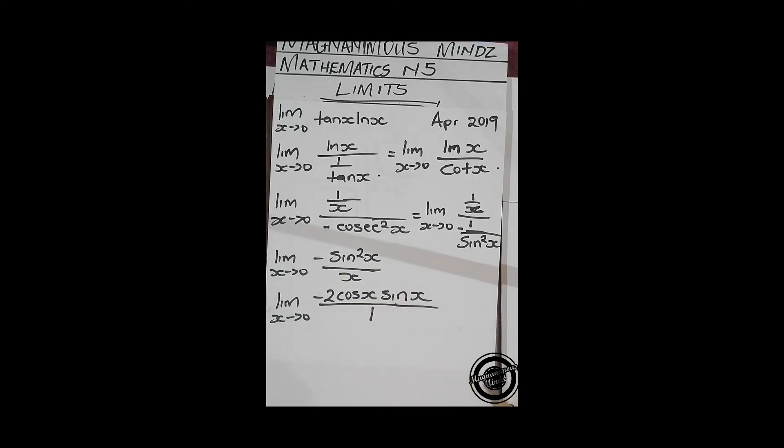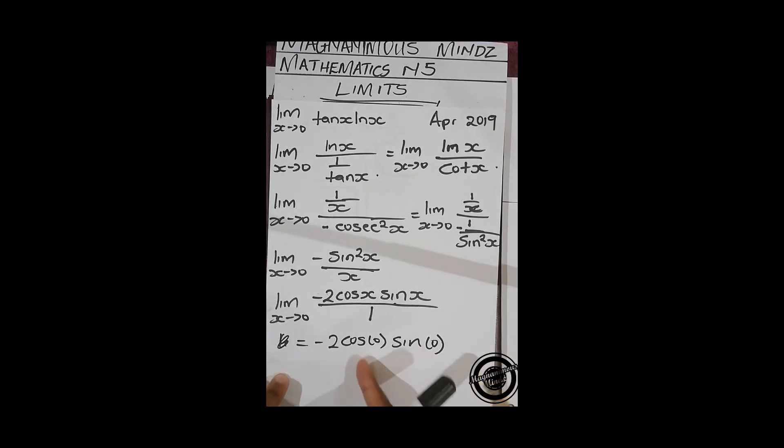Then after getting this, we directly substitute because this is not going to be undefined in any way. If we directly substitute, it's going to give us negative 2 cos zero sine zero. Because cos zero is going to be 1, sine zero is going to be 0, so we get zero. The answer is zero in this case.